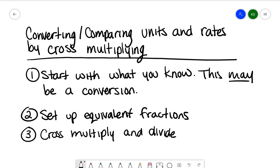Once we take that information, we're going to set up equivalent fractions. This is the key piece in being able to cross multiply and divide. We need to set up two equivalent fractions. We need to know three out of the four pieces of information. Once we've set that up, we're ready to cross multiply and divide.